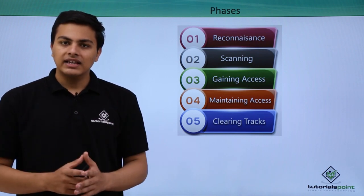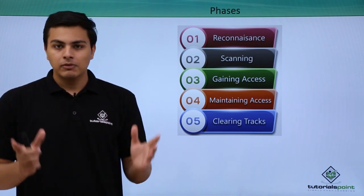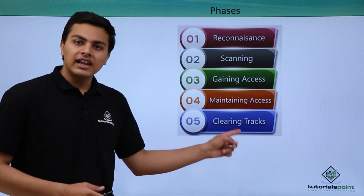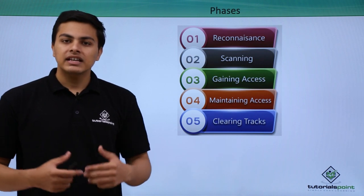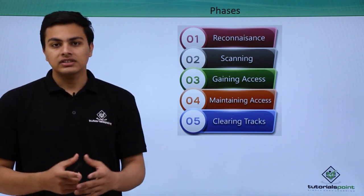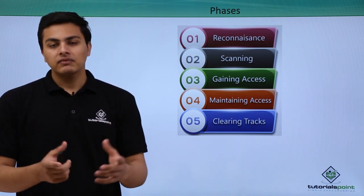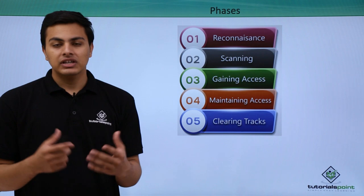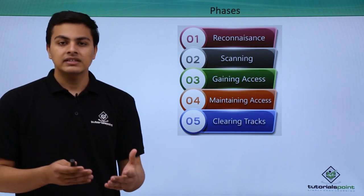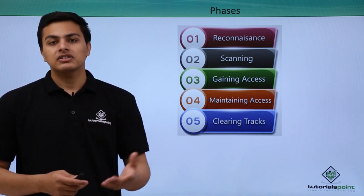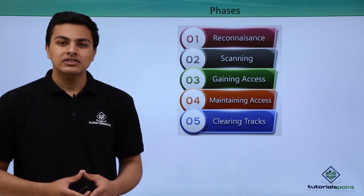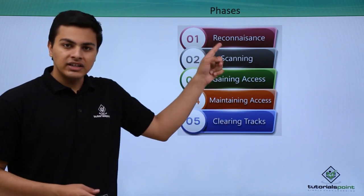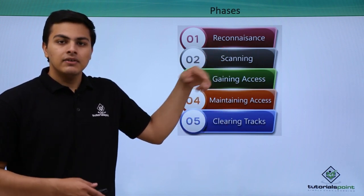Once we have maintained our access and exploited the system, the last phase is clearing tracks — clearing our records. We can delete log files, clear histories, and even change registry settings to remove evidence of our presence.